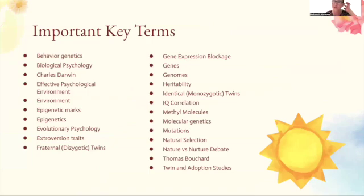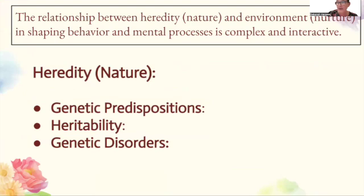We're going to start with the key terms. If you have the full slideshow and the booklet that goes with it, you'll be able to see the actual words and find the definitions. I'm also going to make a separate video going through each word with a definition, explanation, and real-life example. So we're going to start with heredity — also known as nature — which refers to the genetic material we get from our parents. The first key point is genetic predisposition: our genes influence our biological makeup, including physical traits like height and eye color, as well as temperament and vulnerability to certain diseases.